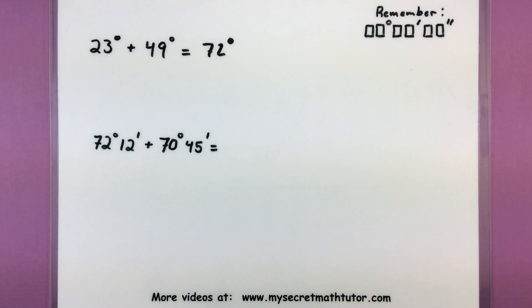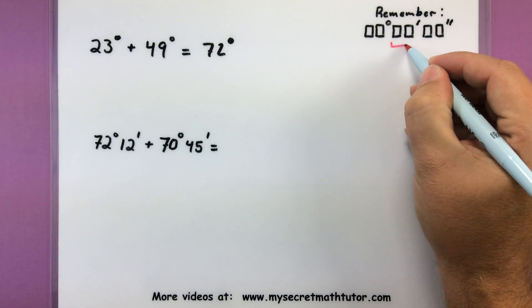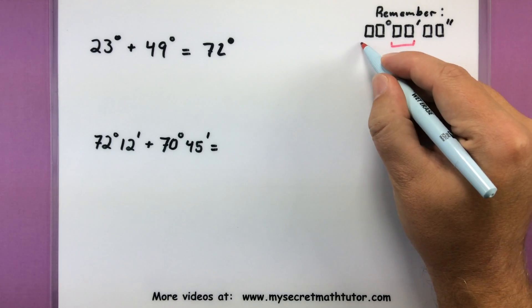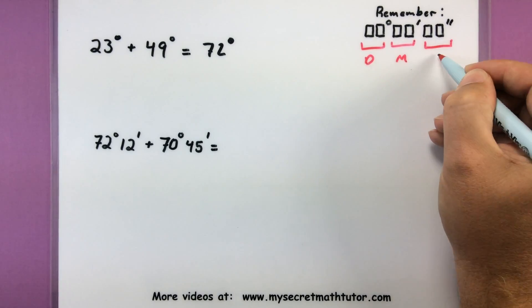Now when we have something like an angle written in degrees and minutes, we have to really put our thinking caps on. This is because you really want to remember that when it comes to minutes and seconds, they're out of 60. So just as a quick reminder, these are our degrees, our minutes, and our seconds.